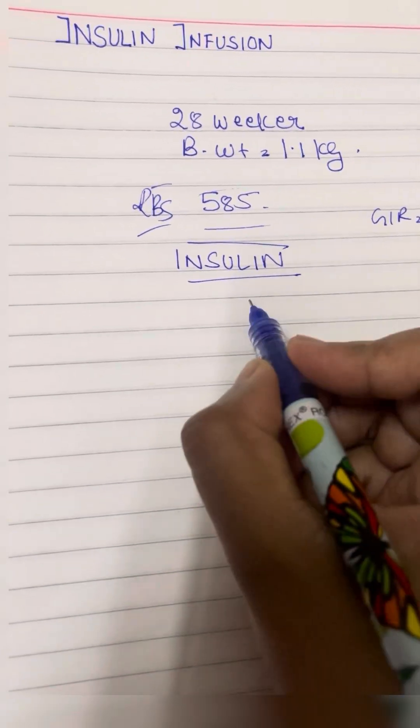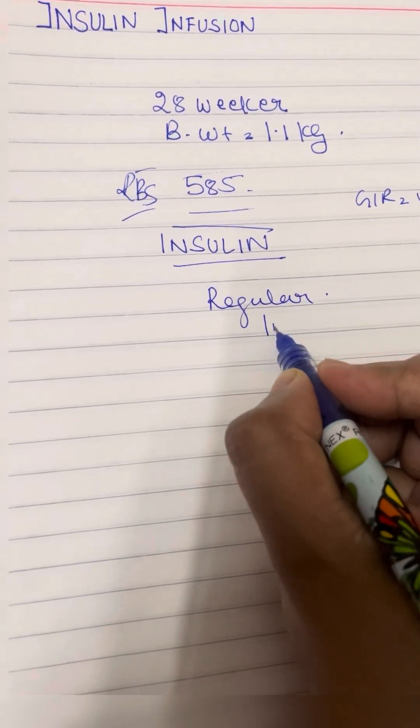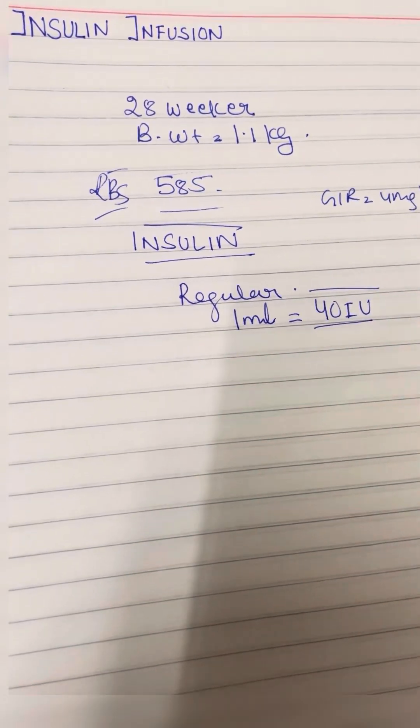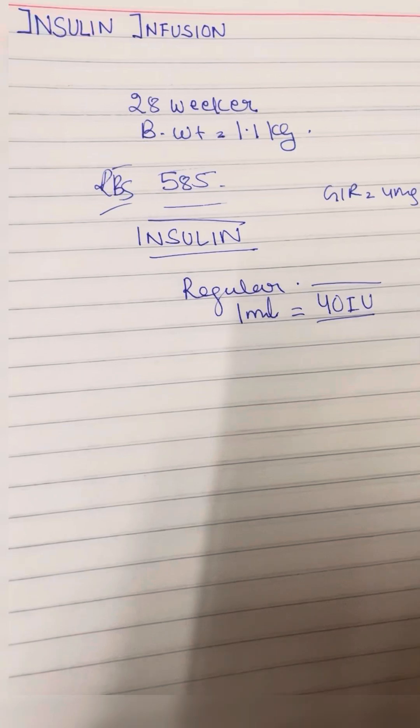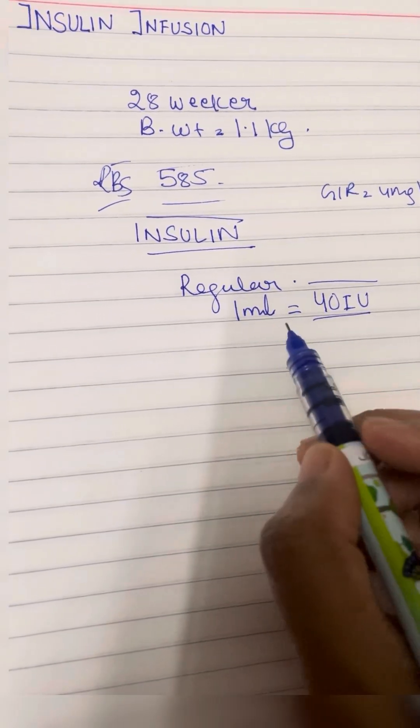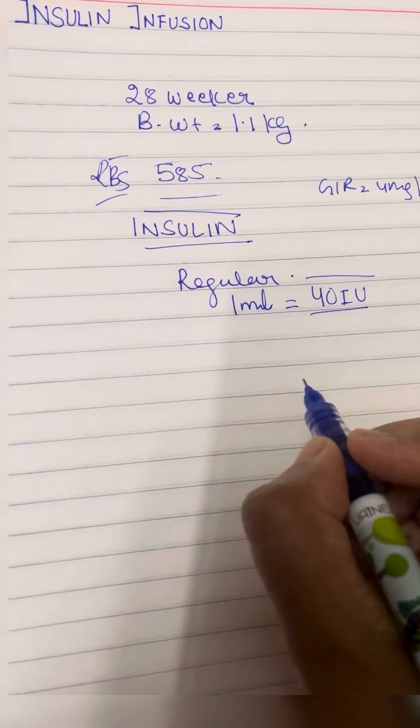So how do you prepare insulin for this baby? Regular insulin that we get has 1 ml equal to 40 international units. I want the concentration such that 1 ml becomes 1 international unit.